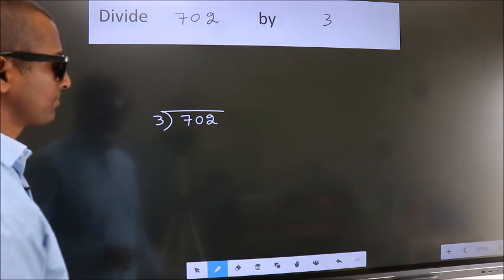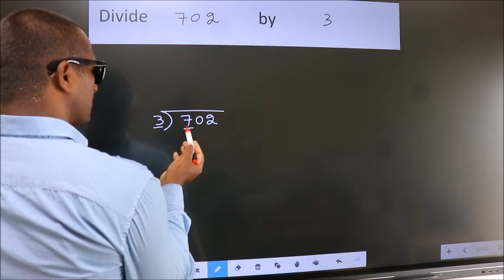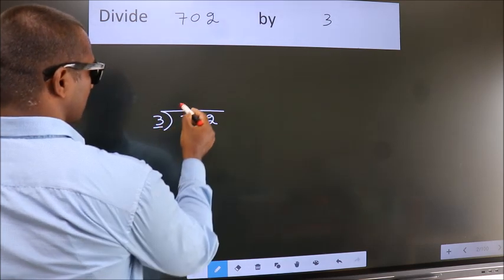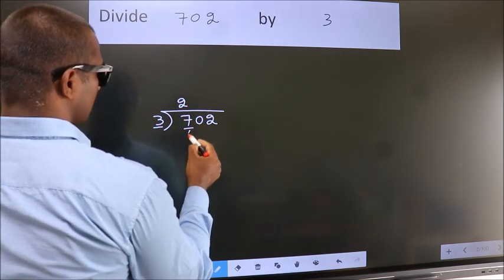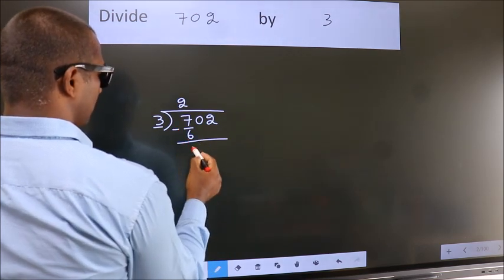Next, here we have 7, here 3. A number close to 7 in the 3 table is 3 times 2 equals 6. Now we should subtract. We get 1.